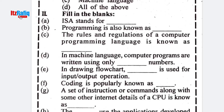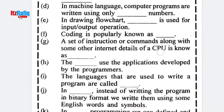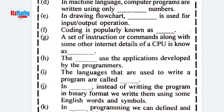Fill in the blanks: ISS stands for Information Instruction Set Architecture. Programming is also known as coding. The rules and regulations of a computer programming language are known as syntax or grammar. In machine language, computer programs are written using only binary numbers. In drawing a flowchart, a parallelogram is used for input/output operations.